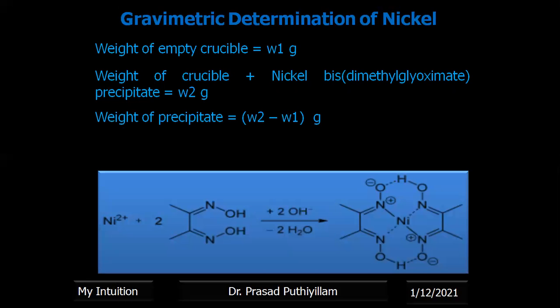Therefore, from this formula, we can see that one mole of nickel ion gives one mole of nickel bis dimethylglyoximate. Therefore, we can connect the atomic mass of nickel with the molecular mass of nickel bis dimethylglyoximate.